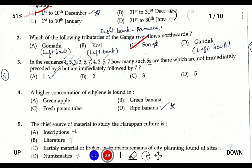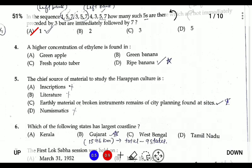Question four: a high concentration of ethylene is found in — ethylene is used for the ripening of fruits, and since one of the options is ripe banana, the ripe banana will have a higher concentration of ethylene compared to the other options.